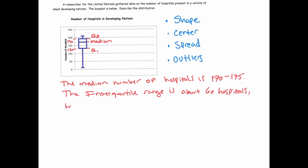This means, remember that a box plot divides the data into roughly four equal sections in terms of the number of data values. So this would mean that the interquartile range is about 60 hospitals.